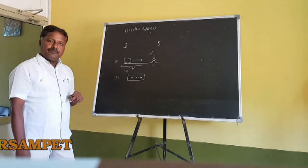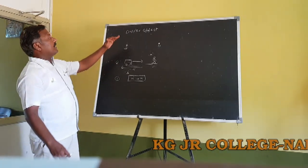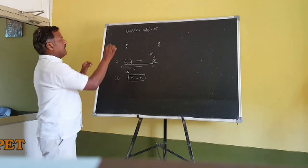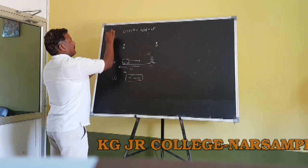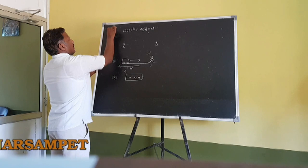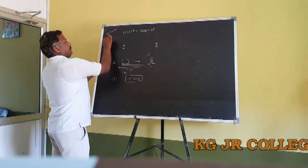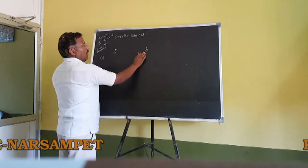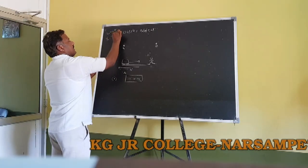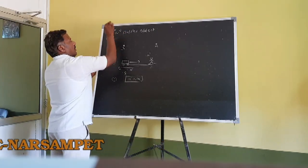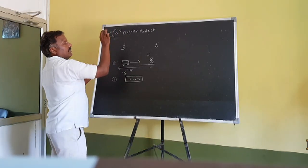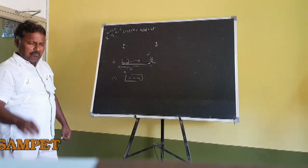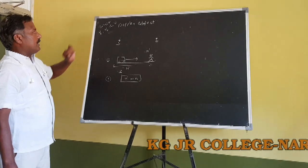The difference between apparent frequency and actual frequency of sound is called Doppler shift. And also, what is the Doppler limit? The velocity of the observer must be less than the velocity of sound. This is called the limit of the Doppler effect.